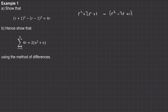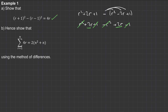Now we'll expand this out. We have r squared plus two r plus one, minus the r squared, plus the two r, minus the one. You can see that the r squared will cancel with the negative r squared, and the positive one will cancel with the negative one. So what we're left with is four r. So we know that this identity is true.